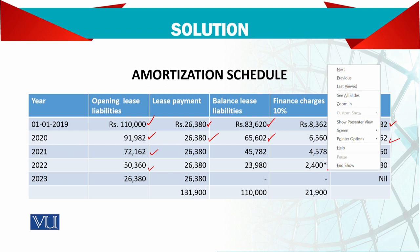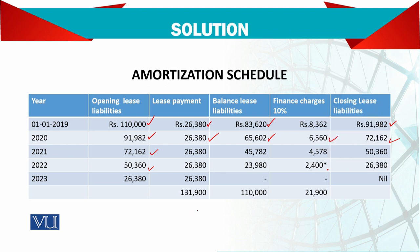Total payments made: 26,380 multiplied by 5 comes to 131,900. The lease asset acquired was 110,000. So the balance — 21,900 — represents the total interest paid over the lease term. Taking the two together, 21,900 plus 110,000 equals 131,900, which matches the total lease payments made.